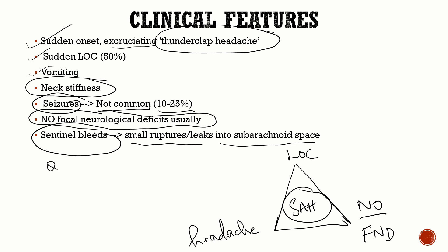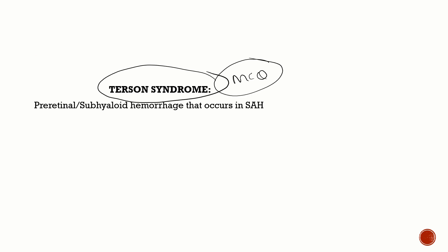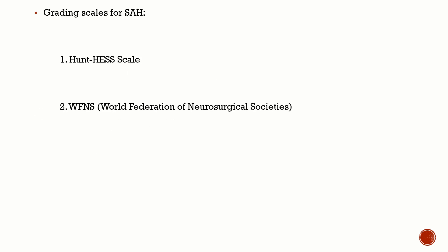Terson syndrome is an important MCQ: in SAH, blood dissects into the pre-retinal or subhyaloid plane — the ophthalmic finding in SAH is pre-retinal or subhyaloid hemorrhage. We have two grading scales for SAH for prognostication: the Hunt-Hess scale and the World Federation of Neurosurgical Societies (WFNS) scale.